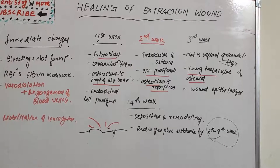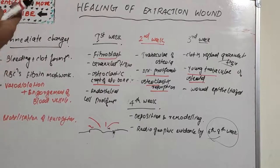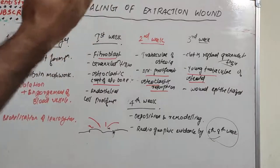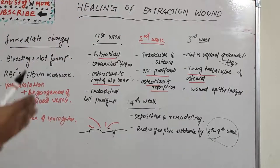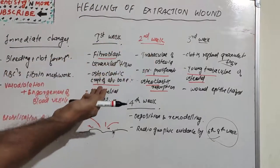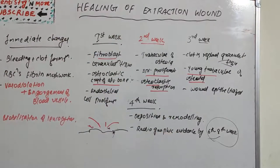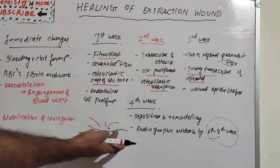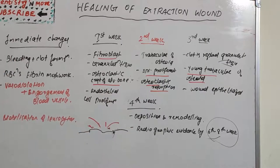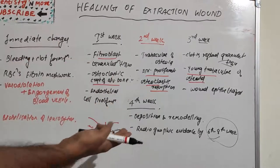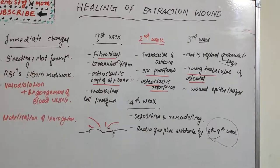These are the basic changes — the series of events happening in an extraction socket: immediate change, first, second, third, and fourth week. The clot is gradually replaced by granulation tissue, osteoid formation occurs, and the alveolar osteoclasts remove the alveolar crest, with healing getting back to near normal around the fourth week.